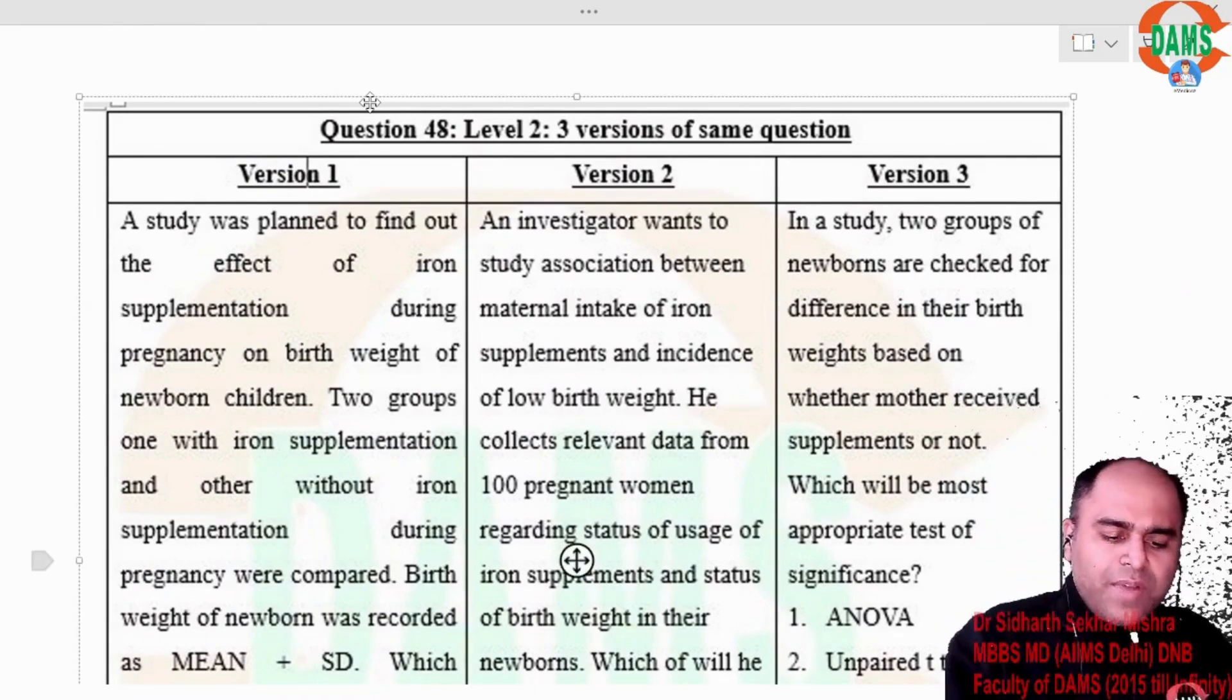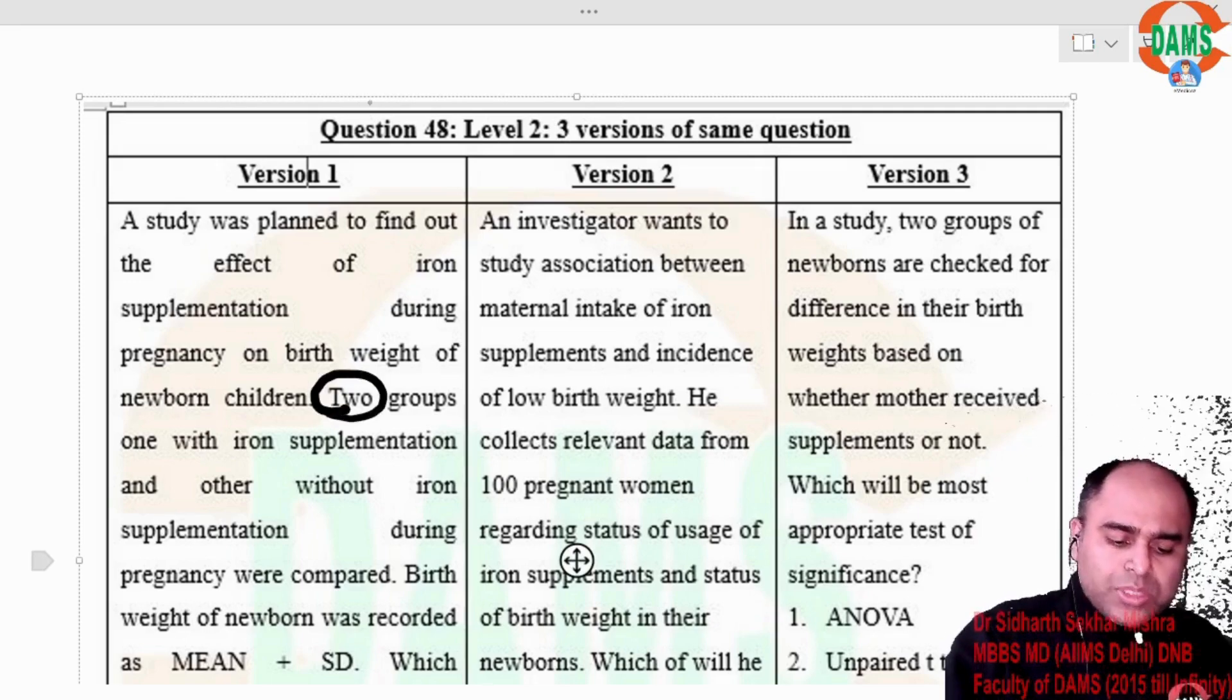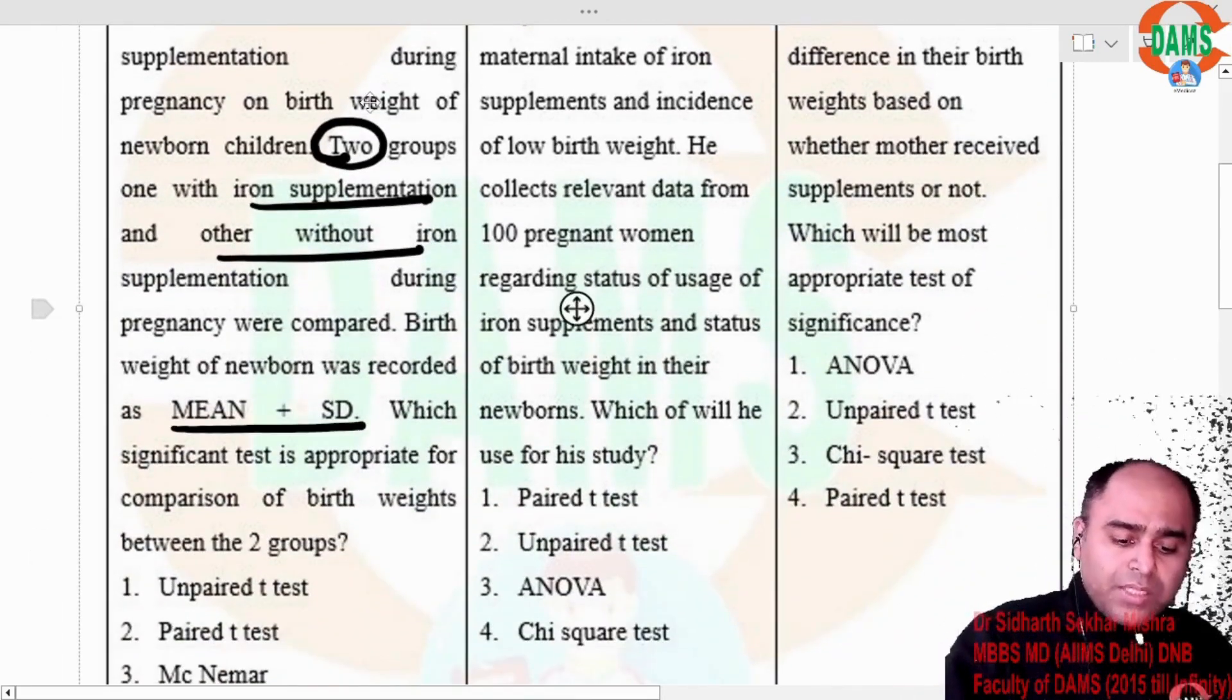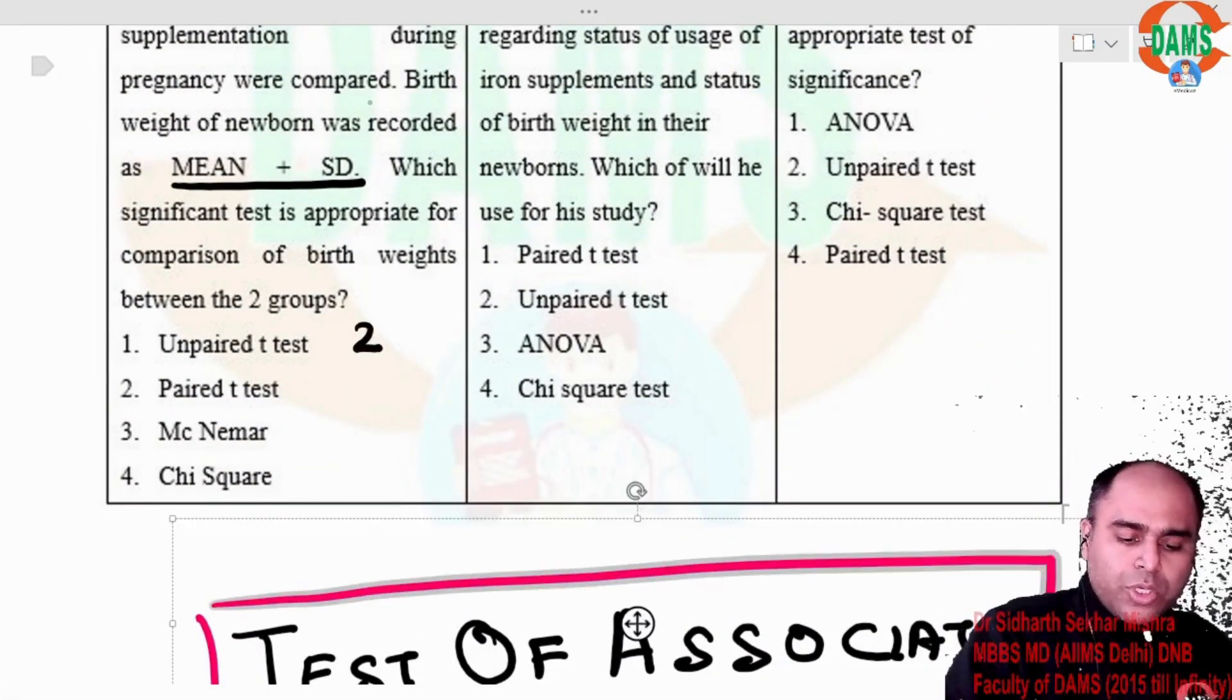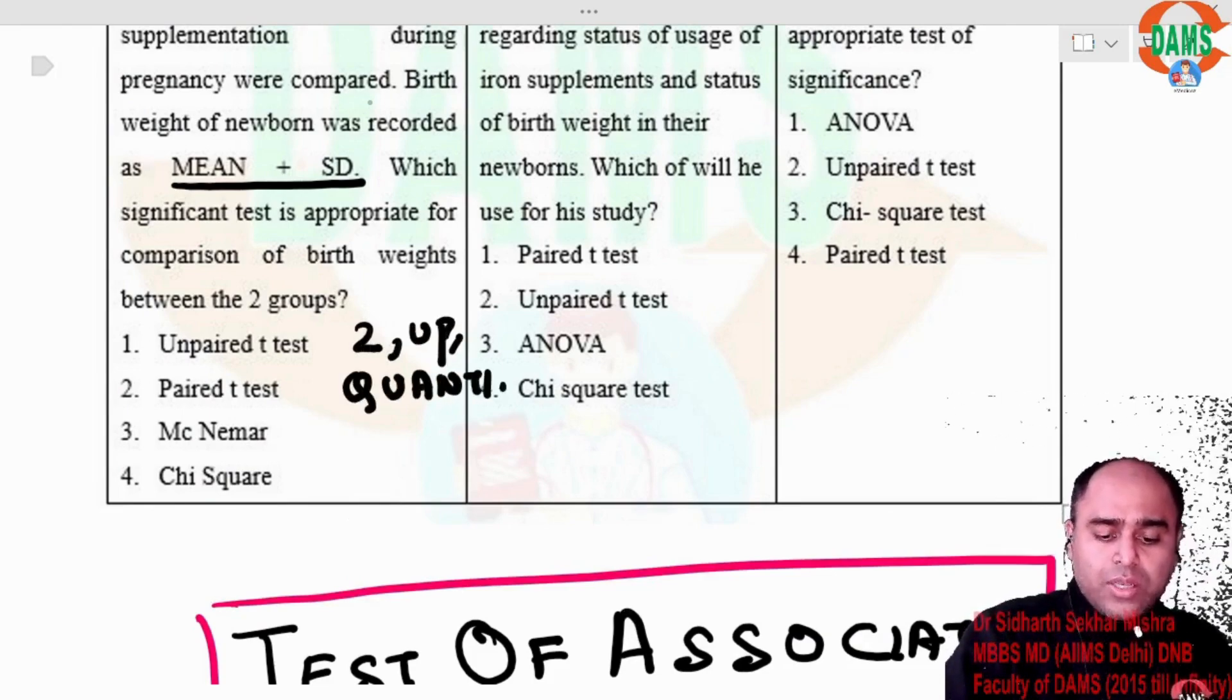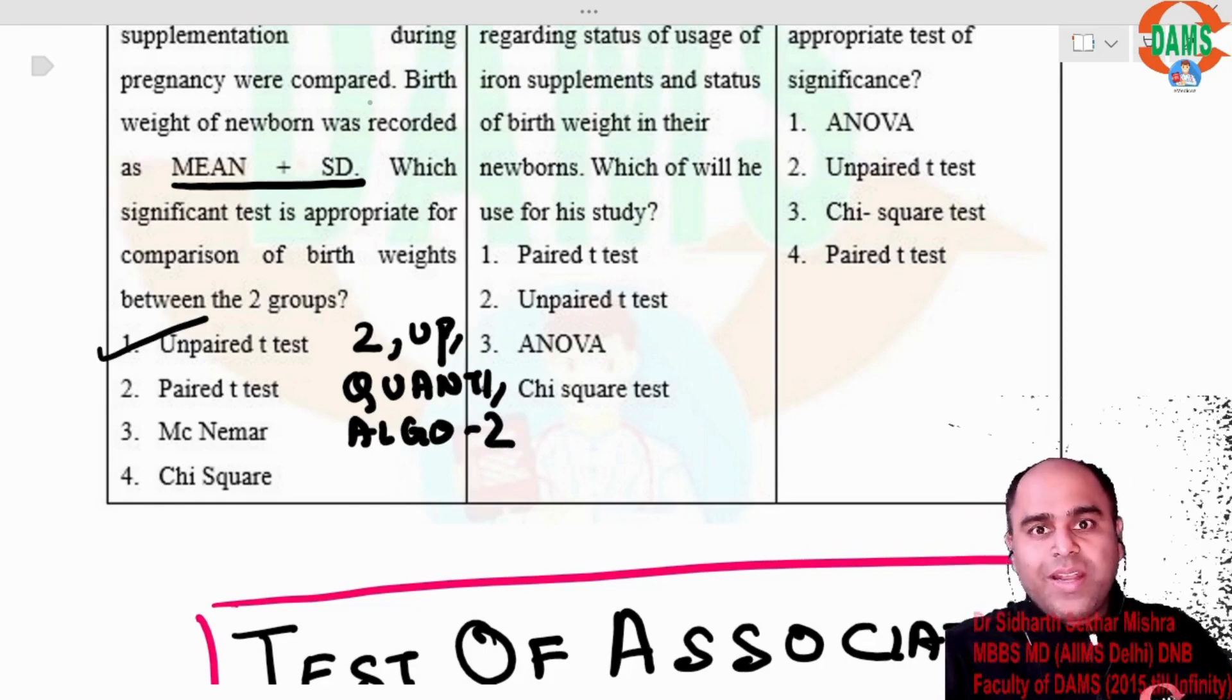Let us have a look. A study was planned to find out the effect of iron supplementation during pregnancy on birth weight of newborn. Two groups, one with iron supplementation and one without iron supplementation during pregnancies were compared. The birth weight was recorded as mean plus standard deviation. So number of groups, 2. It is unpaired. Very clearly, it is given mean plus standard deviation, so it is quanti. Algorithm number 2. We just now saw, answer is unpaired t-test.